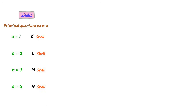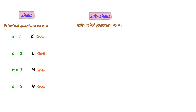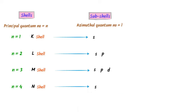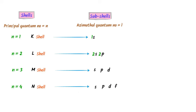Every shell has subshells. Here is a trick to learn the subshells of main shells: I write S, then add one subshell successively — S, SP, then SPD, then SPDF. The S subshell belongs to the first shell, SP subshells belong to the second shell, SPD subshells belong to the third shell, and SPDF subshells belong to the fourth shell.